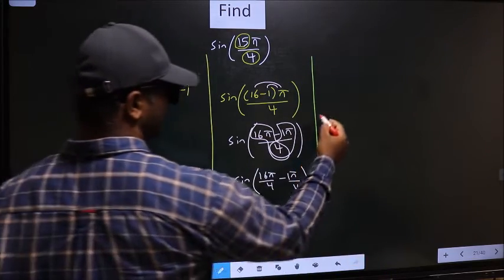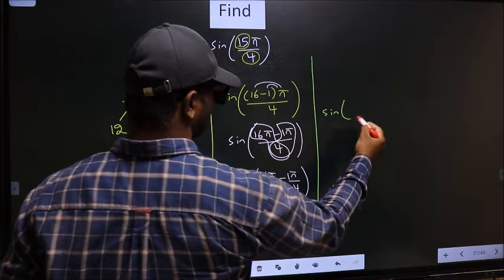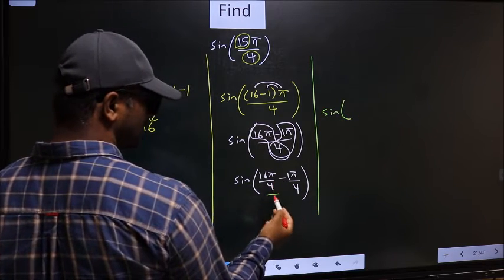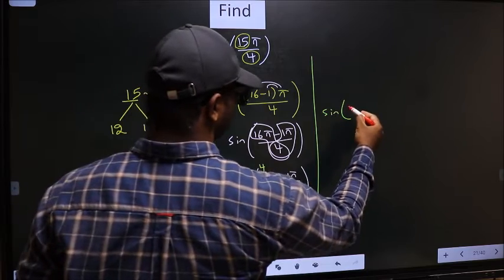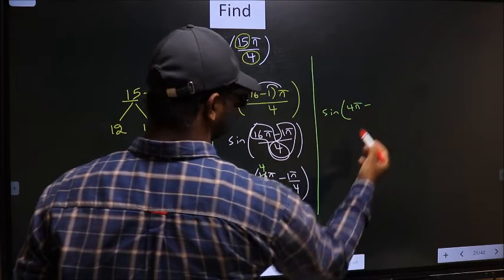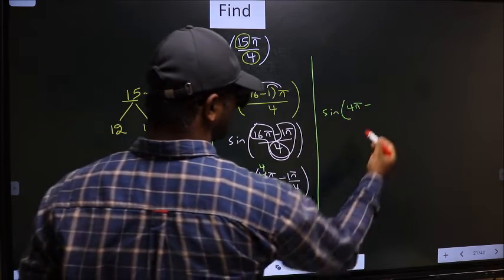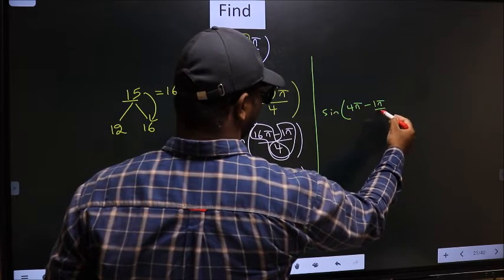Next, sine. Now here you should cancel. 4 ones, 4 fours. So we get 4π minus this, no change, 1π by 4.